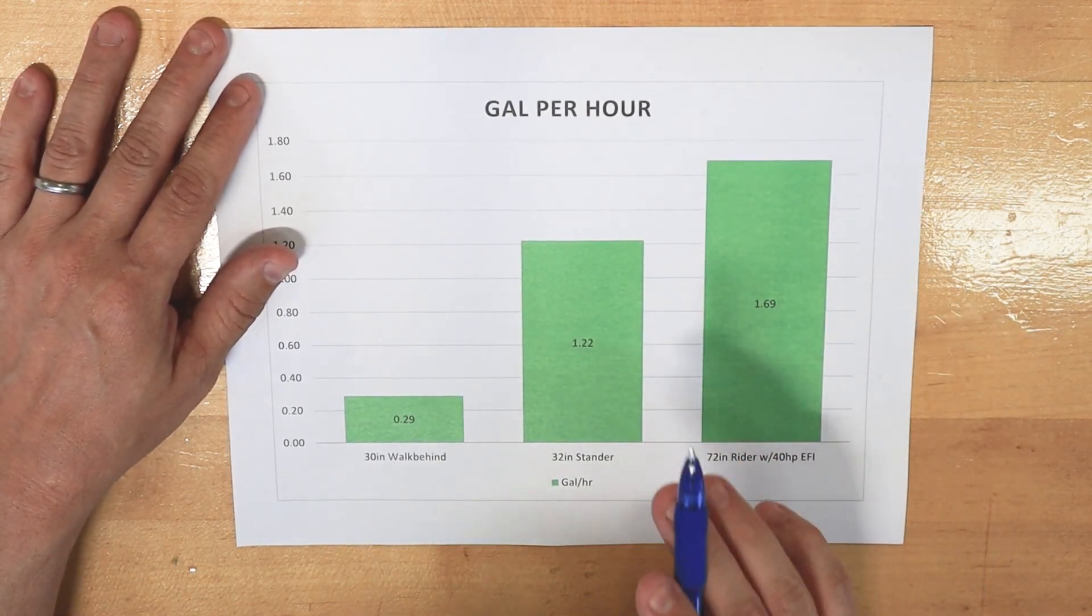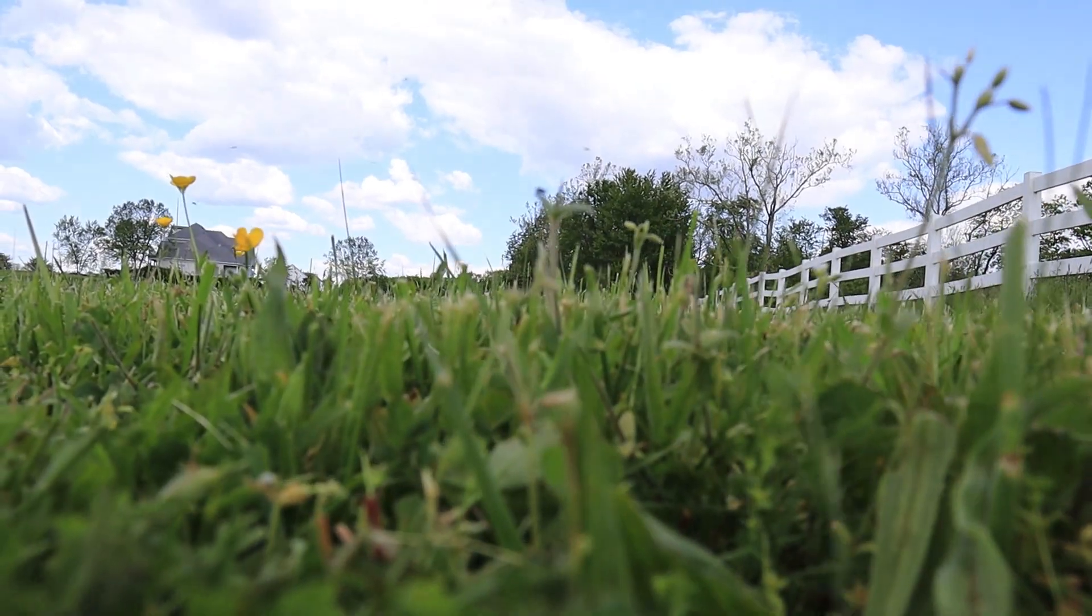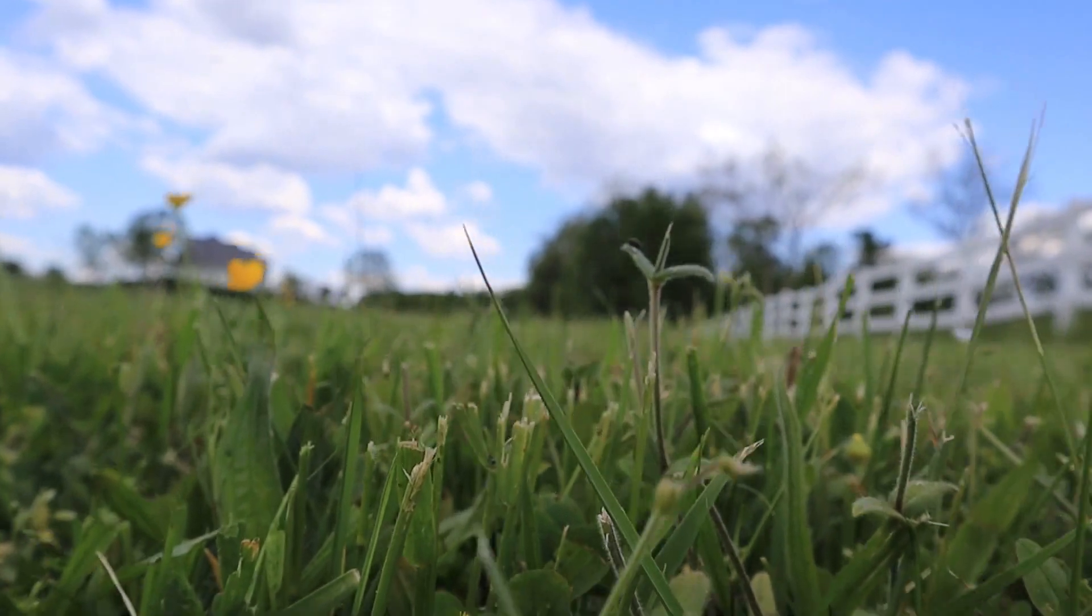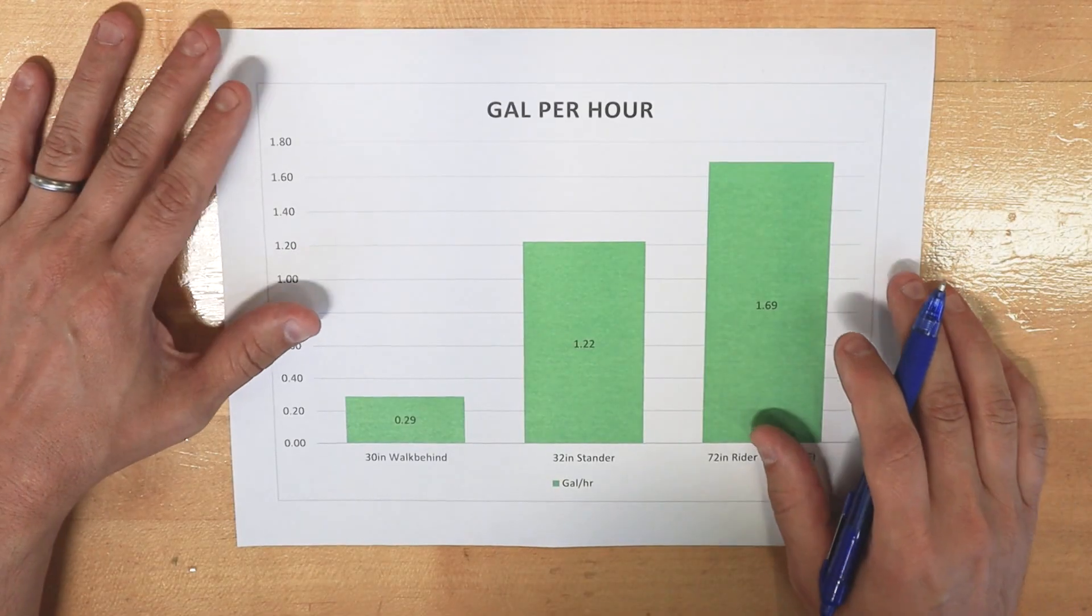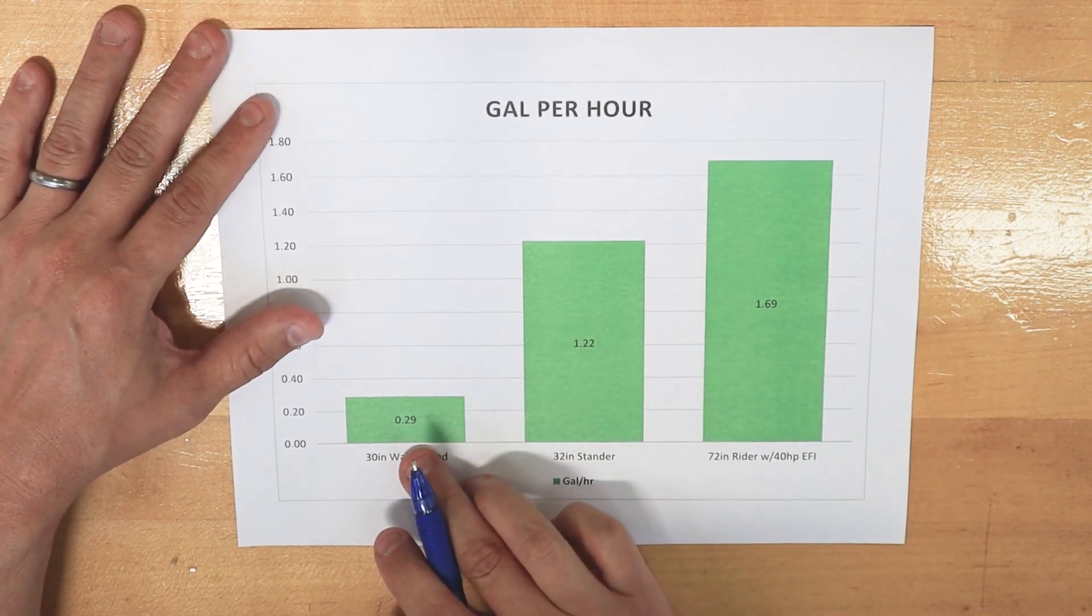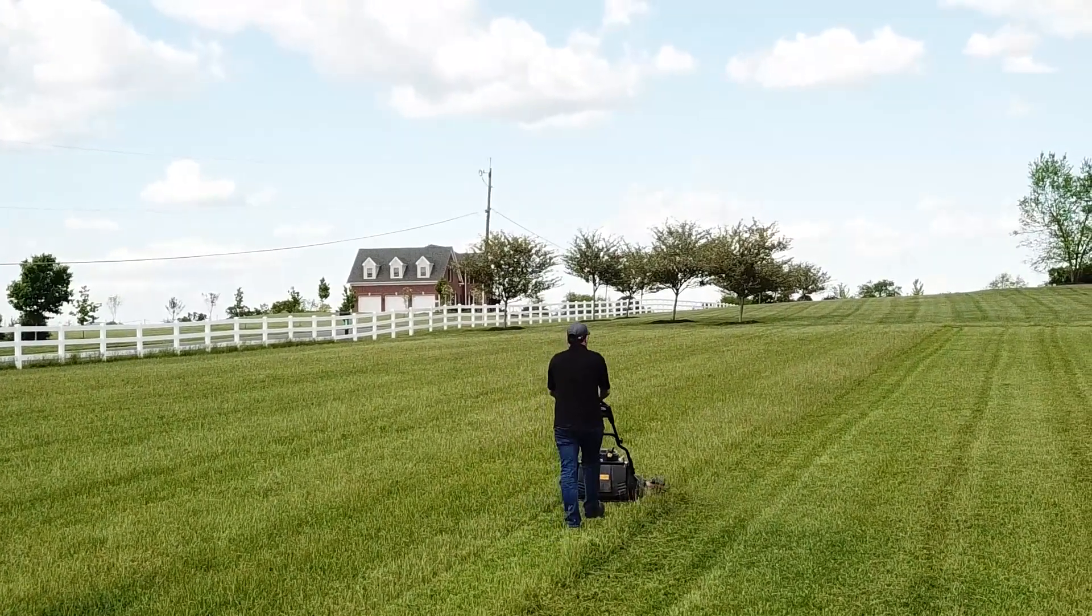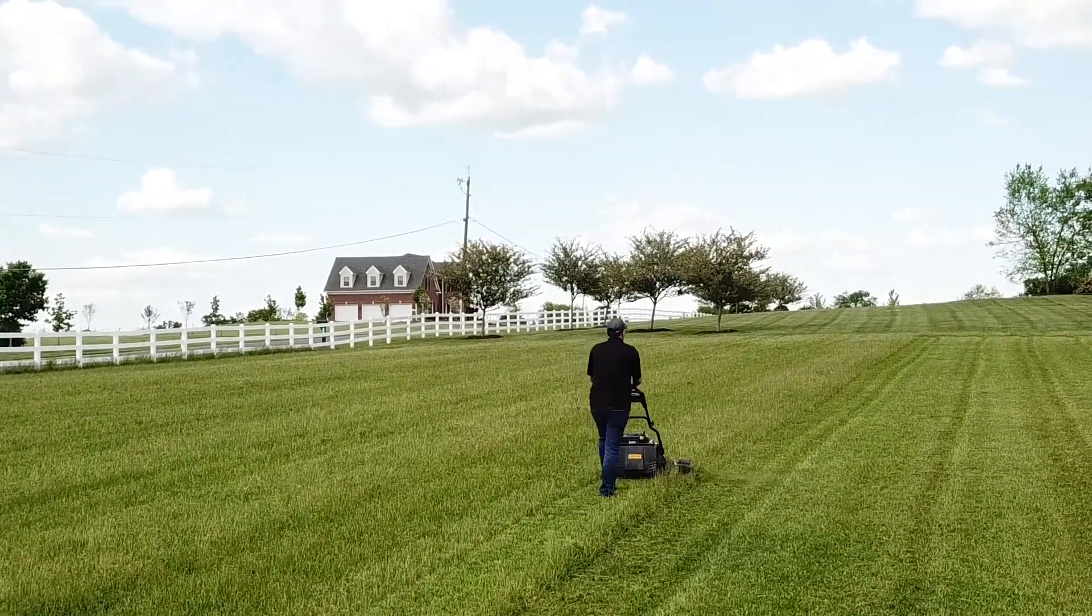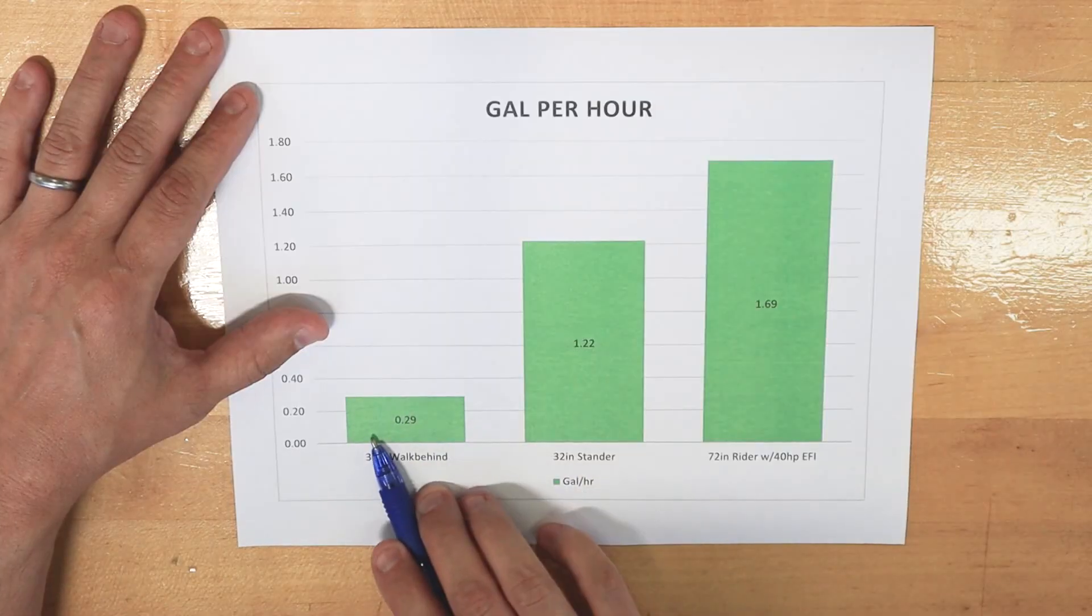So we went out in spring conditions, we cut a moderately heavy grass, somewhat briskly, we're really focusing on loading up the engine, and we ran three different mowers. So the first mower we ran was a smaller machine. It was a 30-inch walk-behind Toro mower. So single cylinder engine, non-EFI, non-rider mower here.